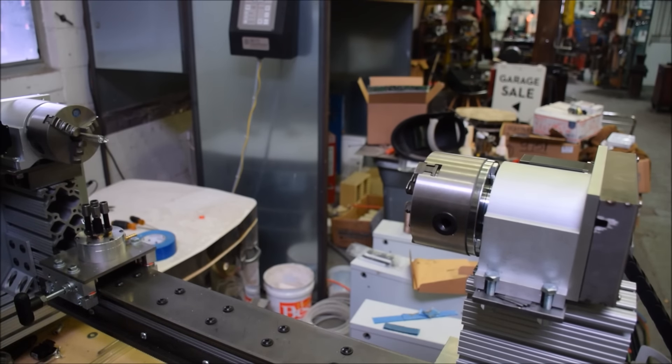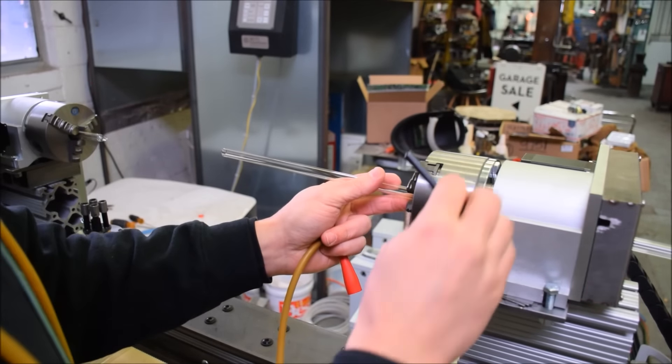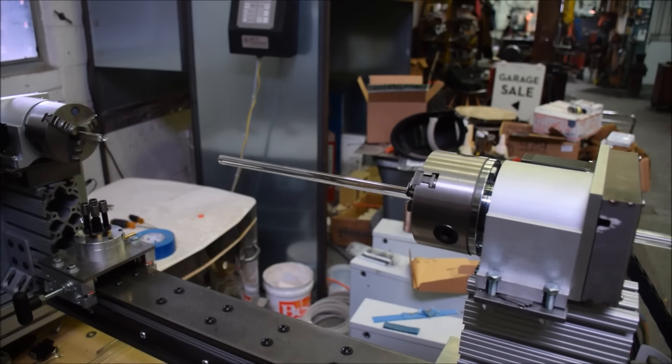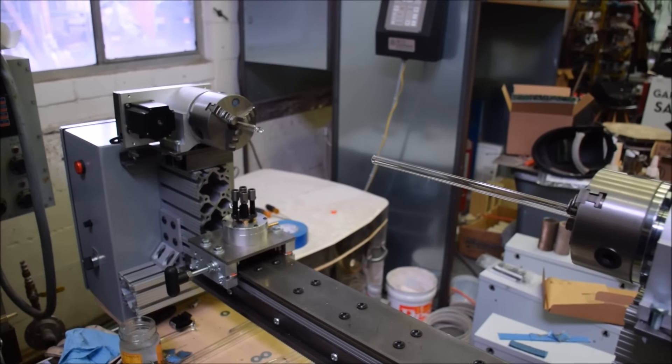I'll talk about the specs a little bit. This particular lathe is 21 3/4 inches between centers. It's easily extendable. This was just kind of my prototype that I built, and decided this was the size that I wanted. But you could really go as long as you want. But this seemed manageable to me. But like I said, it goes as long as you want.